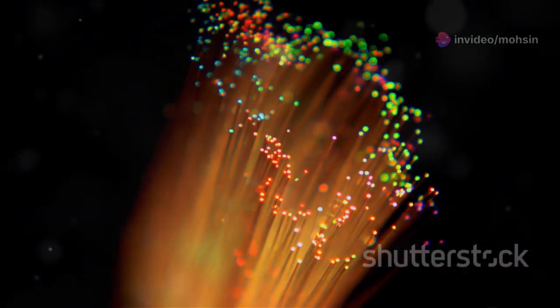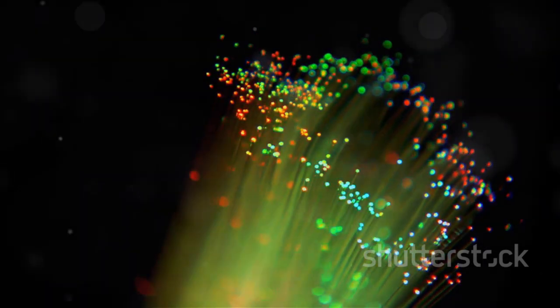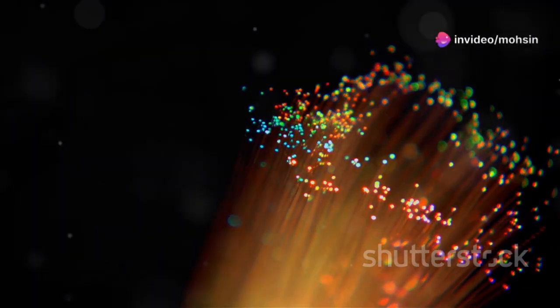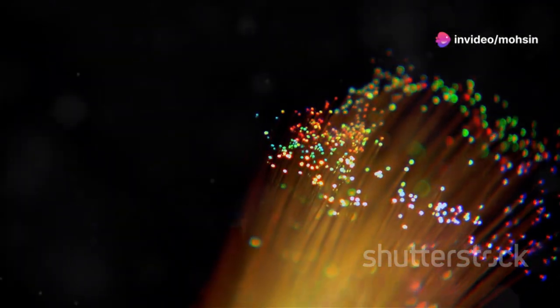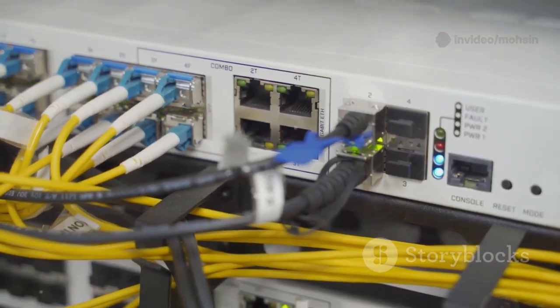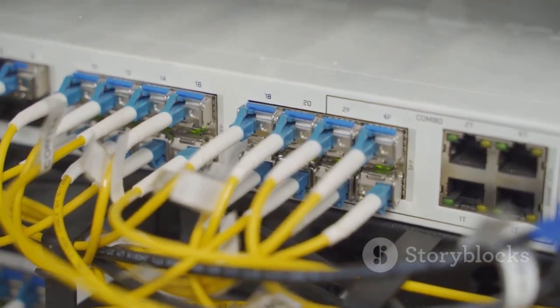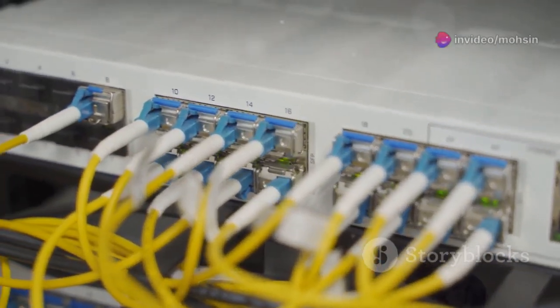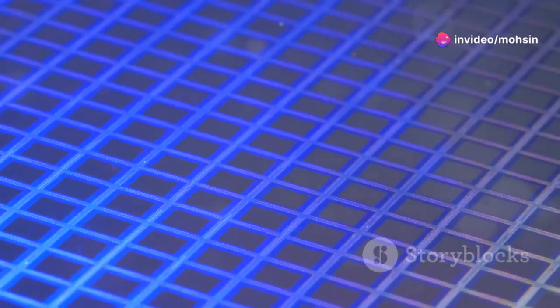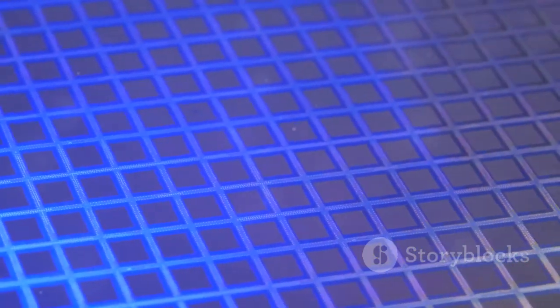Third, parallel processing. Light waves of different colors, called wavelengths, can travel together in the same fiber without interfering with each other. This lets you run many calculations at once, multiplying computing power. This is called wavelength division multiplexing, the same technology that powers today's ultra-fast fiber-optic internet, but now it's being used inside computer chips. On a chip, it means you can process multiple streams of data simultaneously, all within the same tiny space, unlocking new levels of performance.